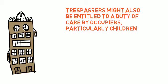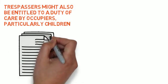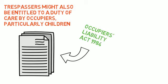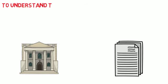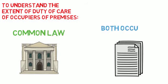As a response, the Occupier's Liability Act 1984 was enacted, in addition to the 1957 Act, to extend the occupiers' duty of care to trespassers. So to understand the extent of duty of care of occupiers of premises, we need to take heed of common law and be aware of the duties under both Occupier's Liability Acts.